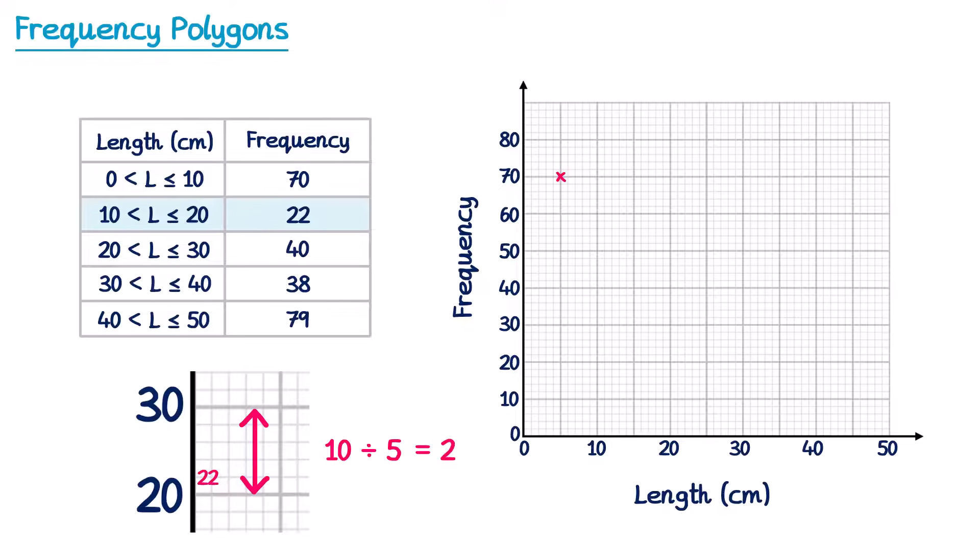Another square will be another 2, so 24, 26, 28, and then of course 30. So sometimes you need to be careful with the scale on the diagram. So when we plot 22 here, we're going to be 1 square above 20, and not 2. So we're trying to plot 15 with 22, and that will go here.